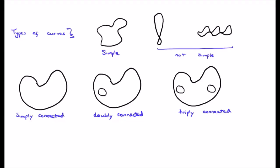The next thing to discuss are the types of curves we can have. A simple curve doesn't cross over itself, while non-simple curves do. A simply connected curve has essentially only one curve; a doubly connected curve has two; a triply connected curve has three. This is not something I want to get bogged down in, but I'm including it for completeness.